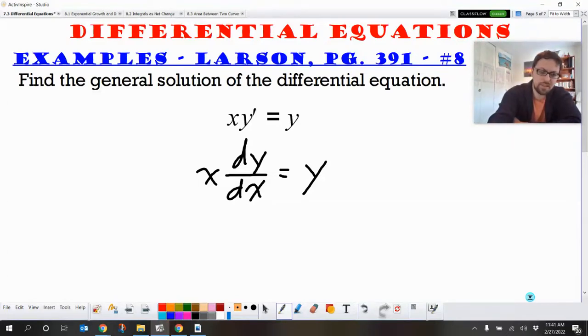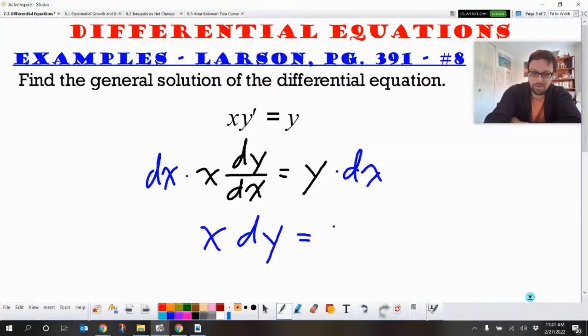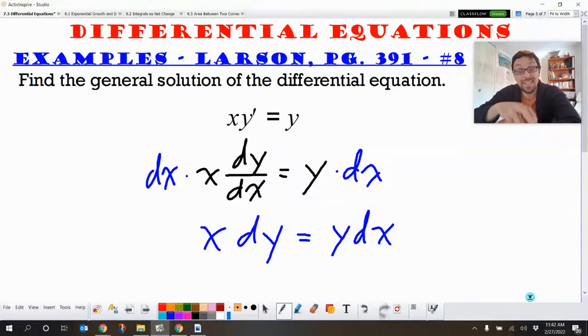So multiply both sides by dx. So we get x dy and then we've got y dx. So we need to bring the x's and the y's to their proper spots. Note that I'm not trying to move the dy or the dx this time because then they would end up in the denominator. I can deal with an x in the denominator. I can't deal with a dy in the denominator. I want just dy or just dx.